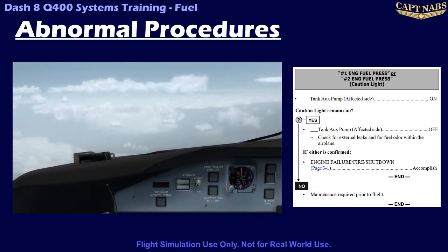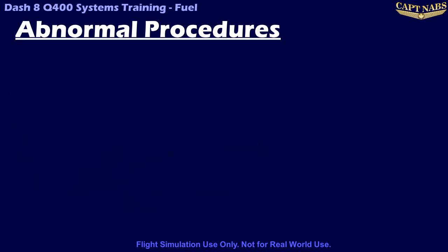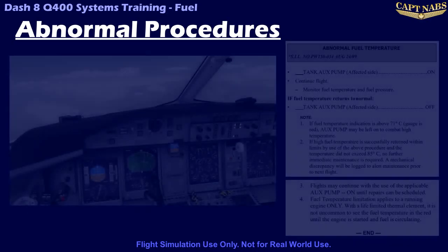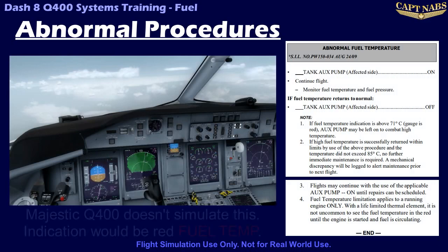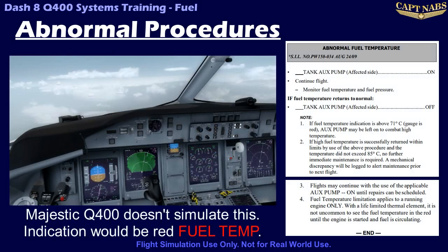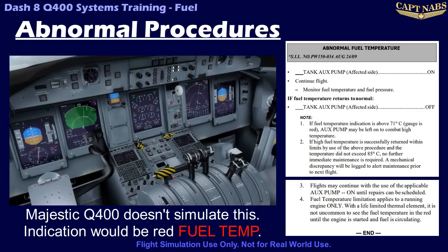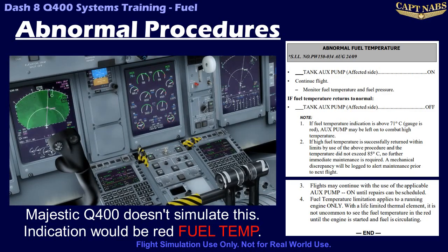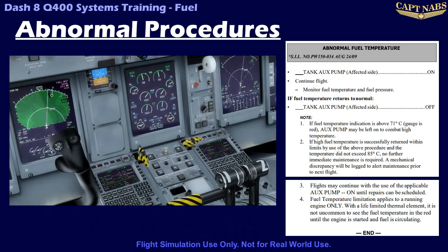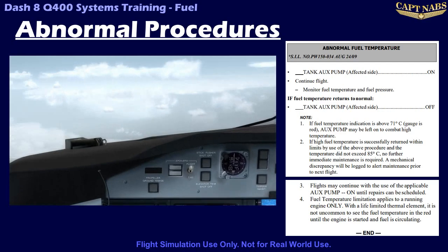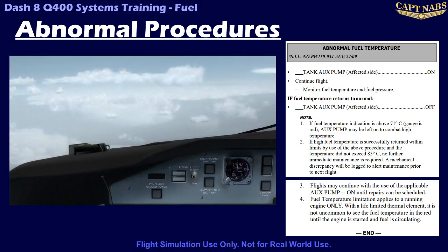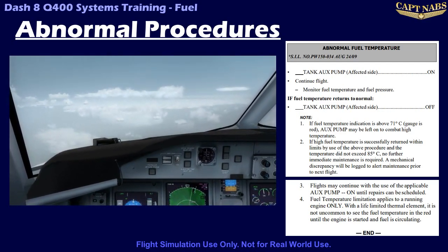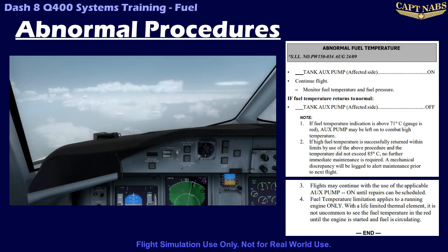The most common fuel system abnormality you will likely encounter is simply an abnormal fuel temperature. This often occurs in the summer during hot ambient conditions while idling on the ground or operating at high power settings during initial climb out. The solution is to turn on the related tank aux pump to increase the fuel flow through the fuel oil heat exchanger, thus diluting the excess heat through more fuel. The pump may be left on as long as necessary without limitations. Once cooler air is reached at higher altitudes, the pump can usually be turned back off again.